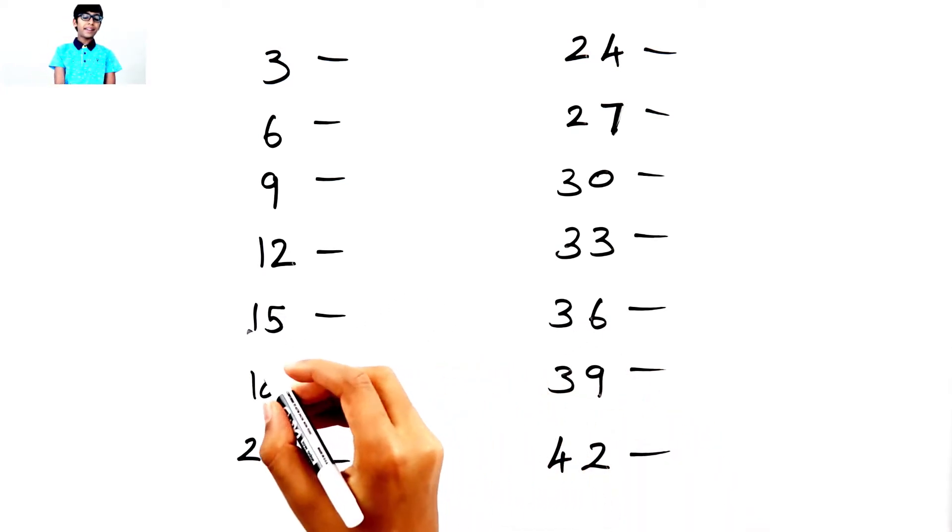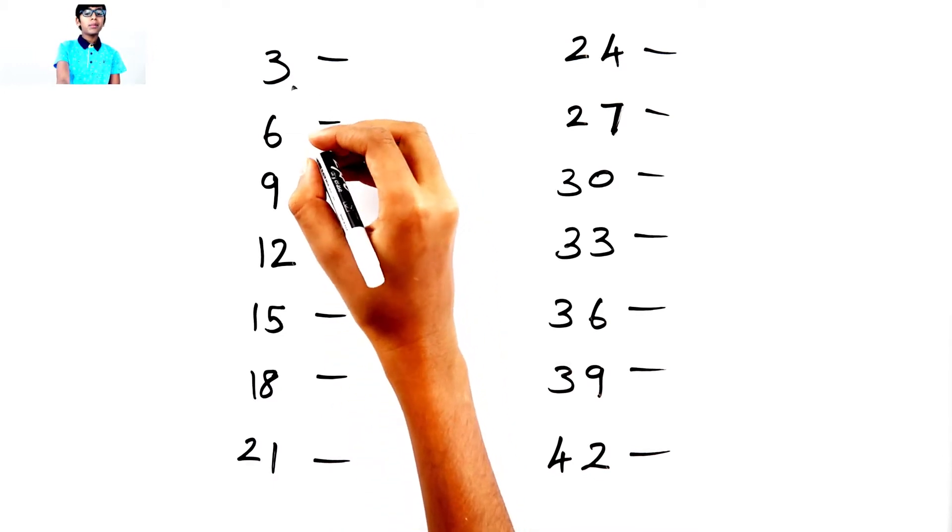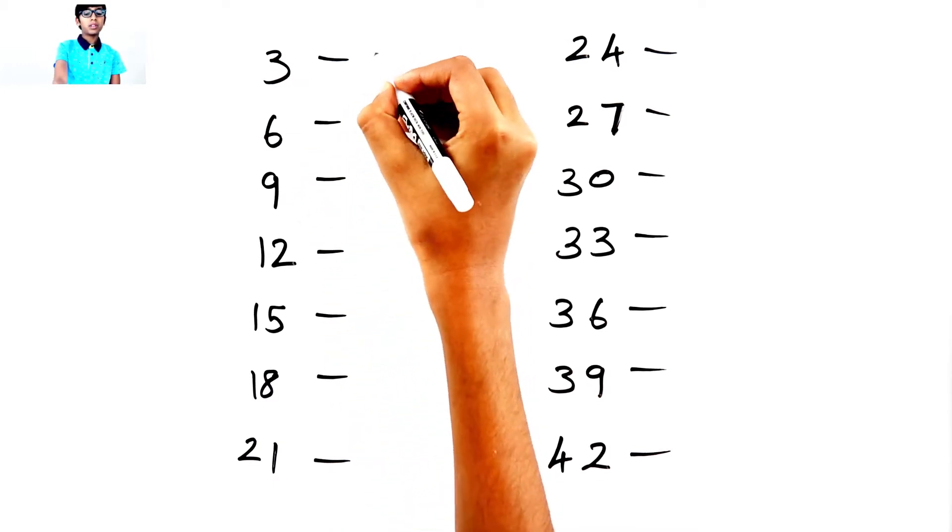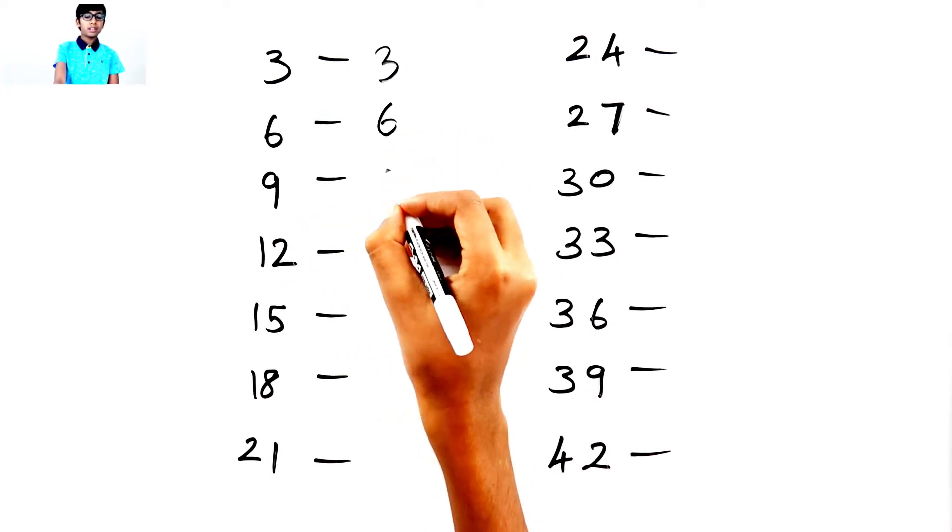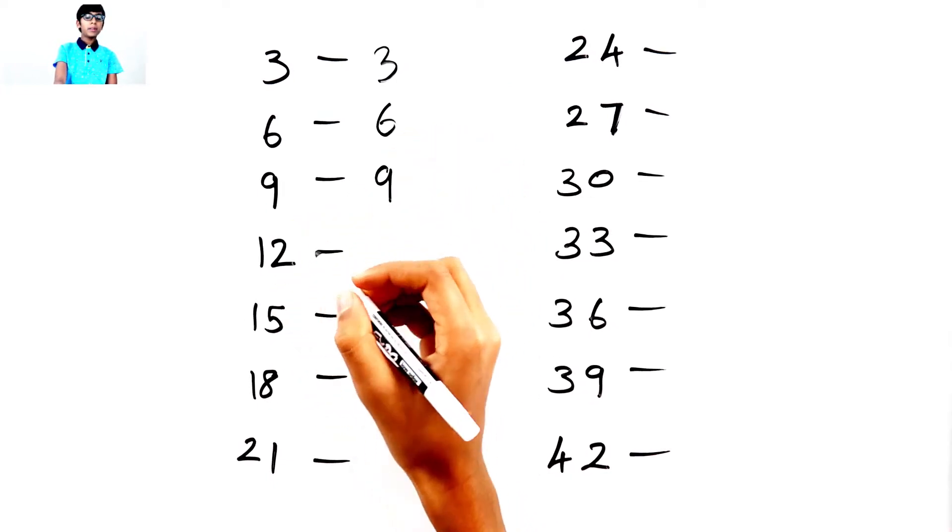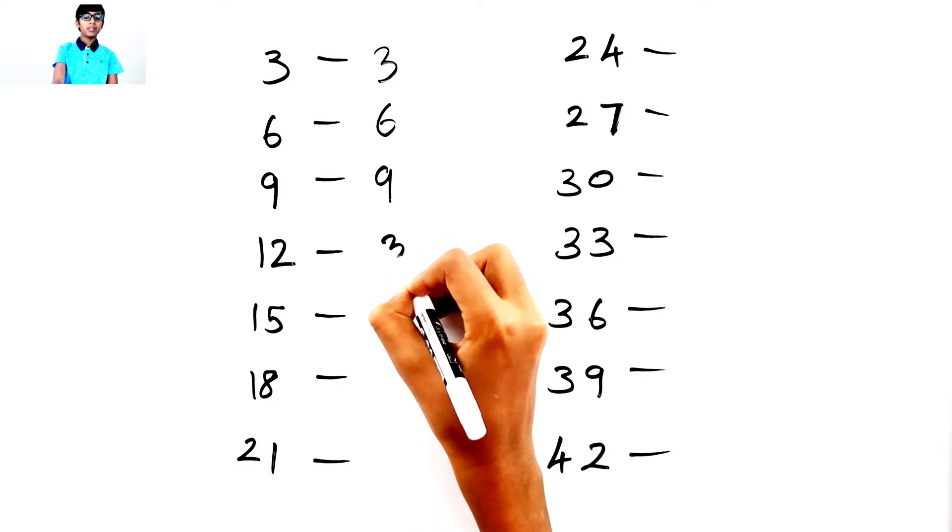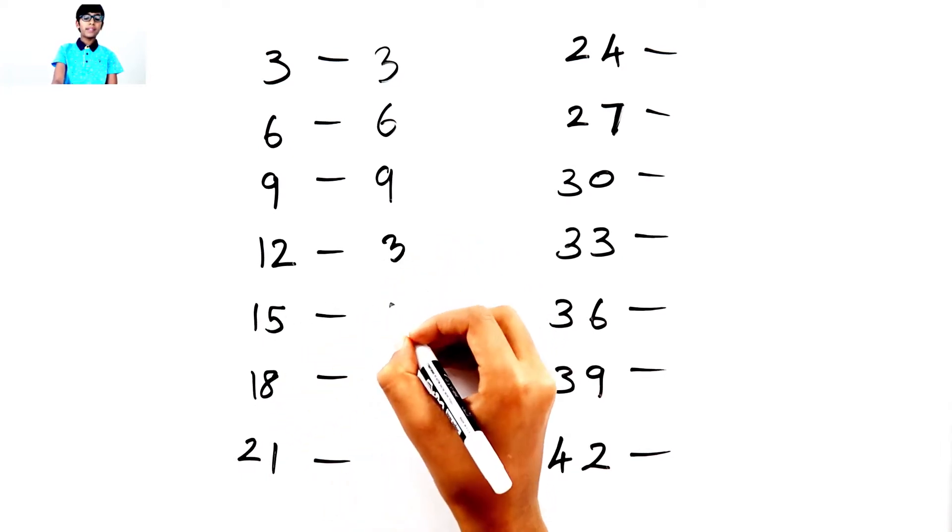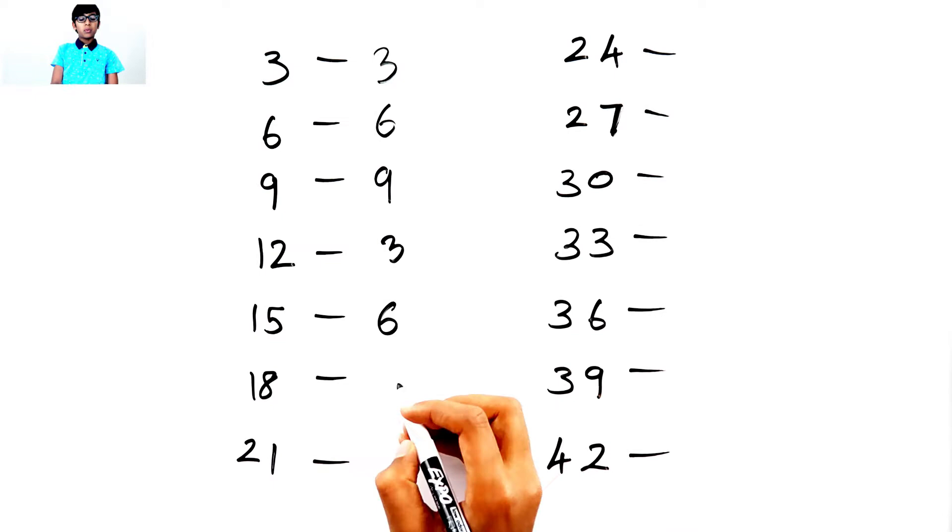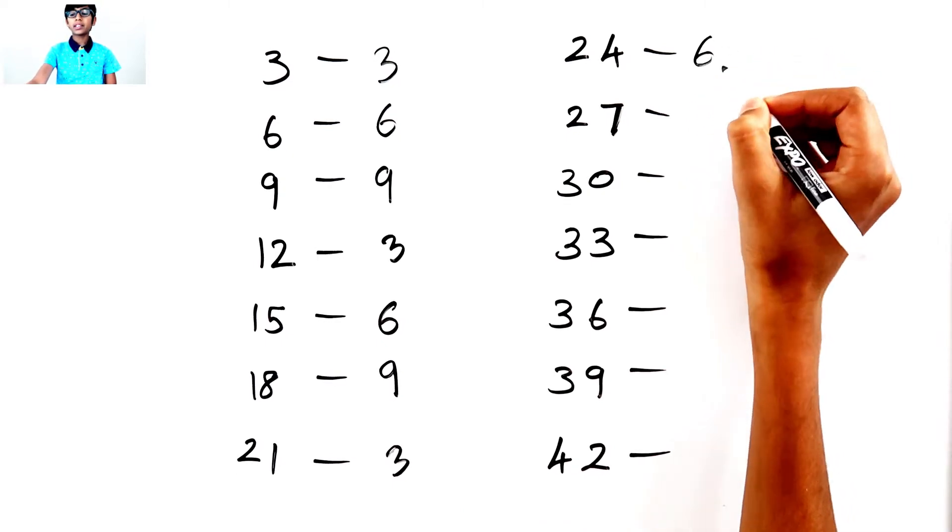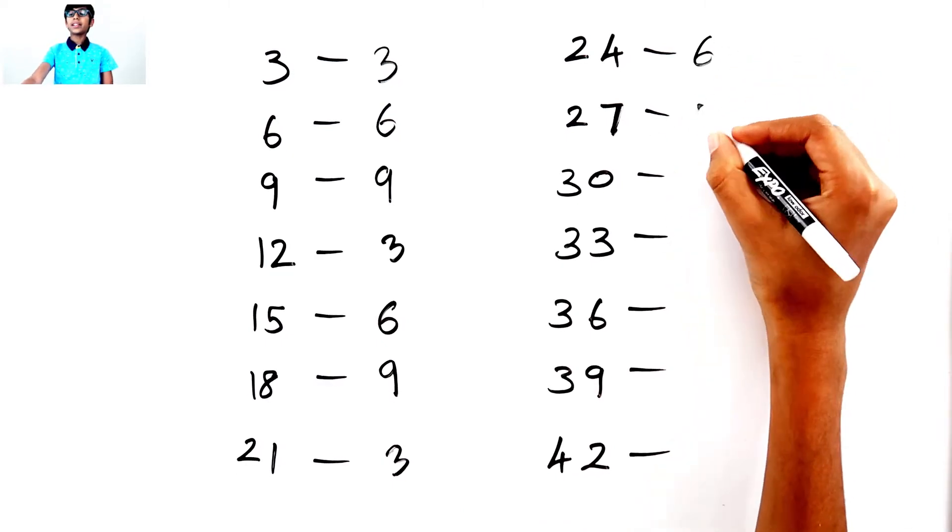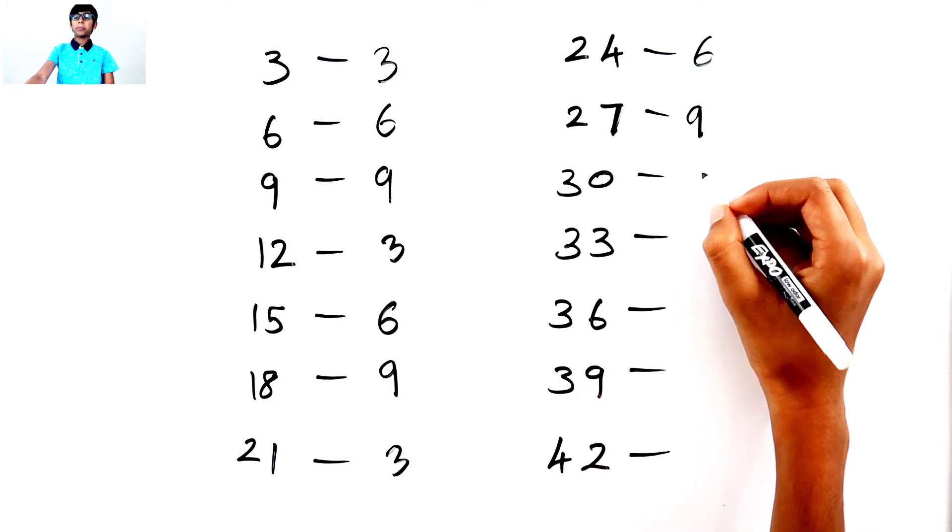Let's add the digits of these numbers. So 3. Solve 3 here. 6. 9. 1 plus 2. 3. 1 plus 5. 6. 1 plus 8. 9. 2 plus 1. 3. 2 plus 4. 6. 2 plus 7. 9.